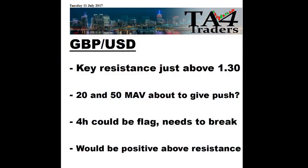That's TA for Traders having a look at sterling — the British pound against the dollar. Key resistance is just above 130. The 20 and 50 moving average could give the push needed to break that if they form a golden cross in the next few days. The 4-hour could be a flag, but it does need to break that downtrend, and it would be positive above resistance. Please remember these videos are for information only and are not meant as an investment recommendation.